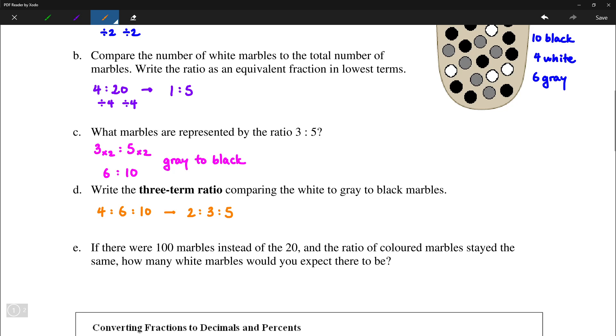If there were 100 marbles instead of 20, we are looking at the ratio of the marbles staying the same. How many white marbles would there be instead of 4? So notice that in this example, 100 is equal to 5 times 20. So if the ratio stayed the same, then there will be 5 times as many white marbles as well. So we have 5 times 4, which is going to be 20 white marbles.